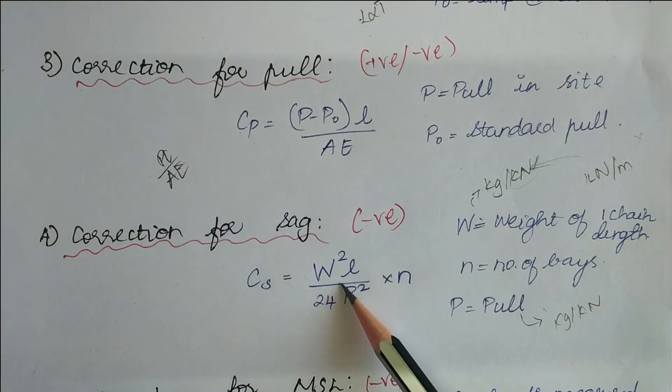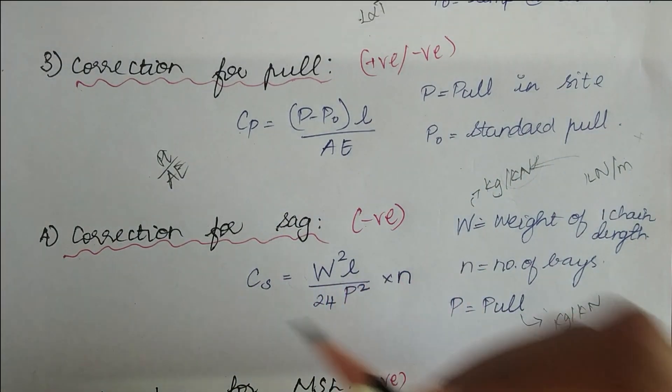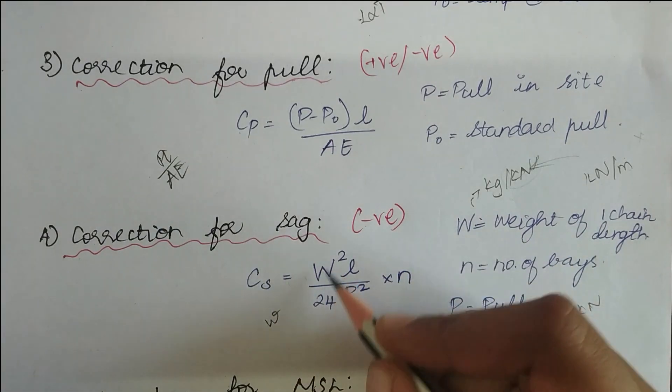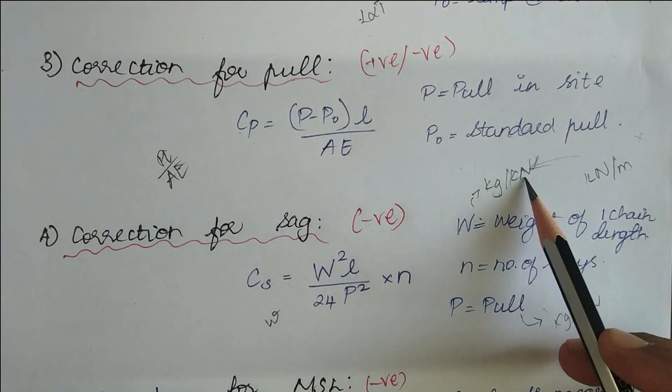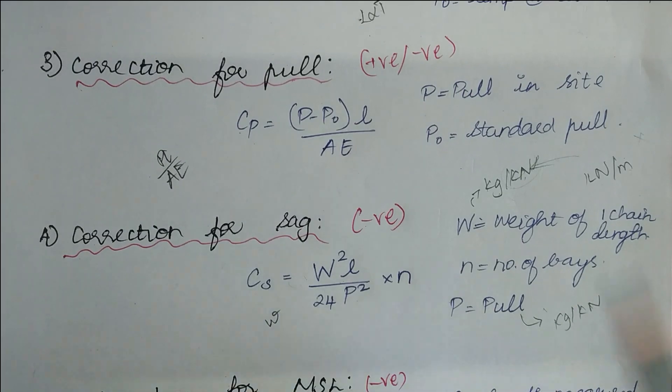The kilonewton per meter has to be brought to this unit. For that you have to multiply kilonewton per meter into the required distance. Only then this formula is applicable. This is capital W not small w. So capital W's unit is going to be kilonewton or kg. Just keep this in mind.